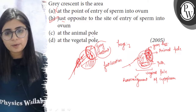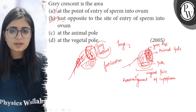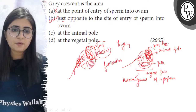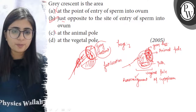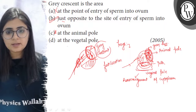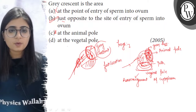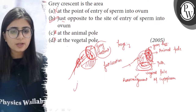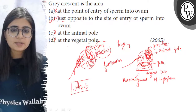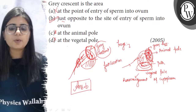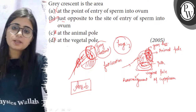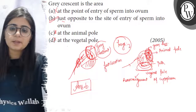Option C — it is at the animal pole — is not true; it is formed after the rearrangement of cytoplasm. Option D — at the vegetal pole — is also not true, as the vegetal pole has the yolk. So the only correct option is option B. This gray crescent is found in many frogs. I hope this explanation is clear — all the best!